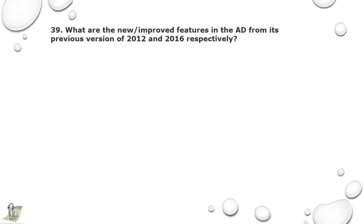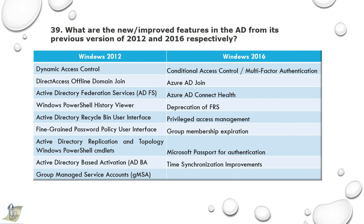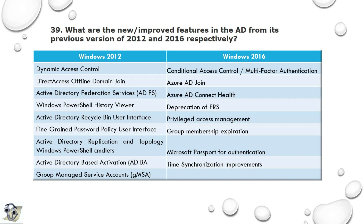39th and final question: What are the new or improved features in AD from 2012 and 2016 respectively? Features updated from 2008 to 2012: Dynamic Access Control, Direct Access Offline Domain Join, Active Directory Federation Services, Windows PowerShell History Viewer, Active Directory Recycle Bin User Interface, Fine-Grained Password Policy User Interface, Active Directory Replication and Topology Windows PowerShell CMDlets, Active Directory Based Activation, and Group Managed Service Accounts. Features updated from 2012 to 2016: Conditional Access Control, Multi-Factor Authentication, Azure AD Join, Azure AD Connect Health, Deprecation of FRS, Privileged Access Management, Group Membership Expiration, Microsoft Passport for Authentication, and Time Synchronization Improvements.